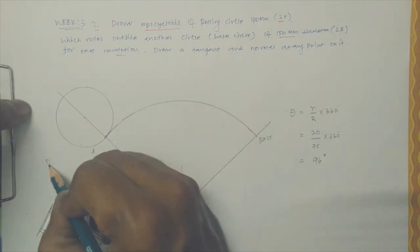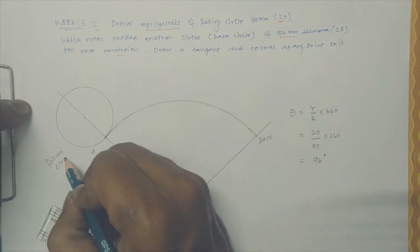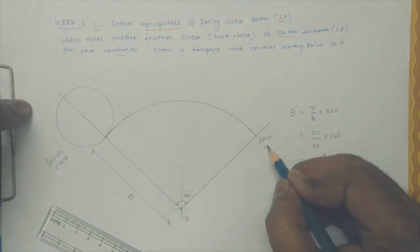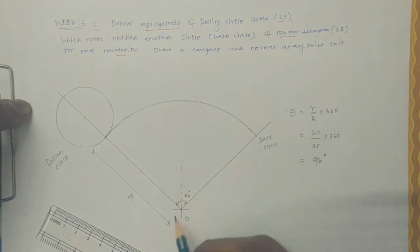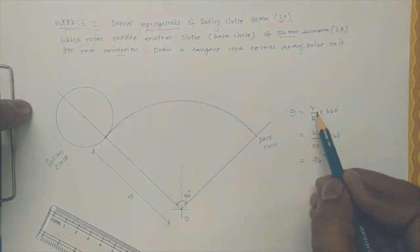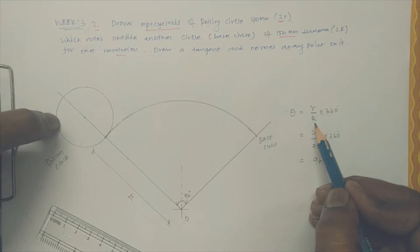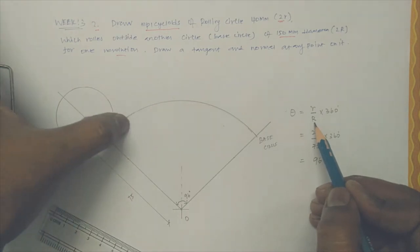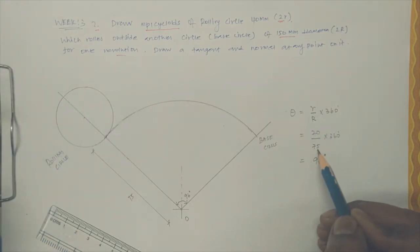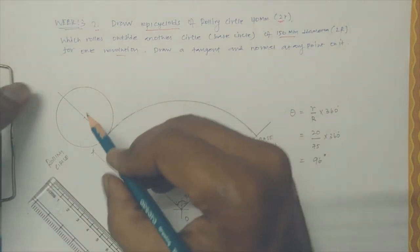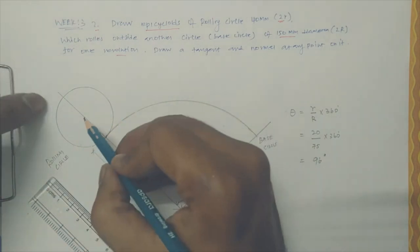This angle is from like this, so small r is the rolling circle radius, capital R is the base circle radius, 20 divided by 75, multiplying by 360 will give you the interior angle. So what we did earlier, the same we're just going to do, this is the center.